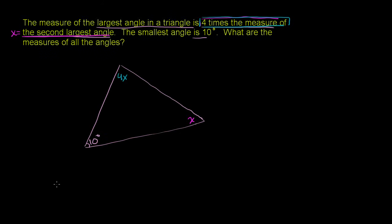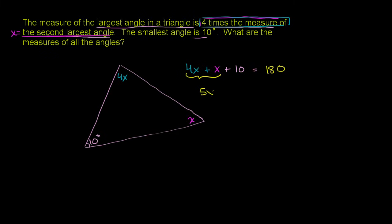The one thing we know about the measures of angles inside a triangle is that they add up to 180 degrees. So we know that 4x plus x plus 10 degrees is equal to 180. And 4x plus x gives us 5x, so we have 5x plus 10 equals 180 degrees.